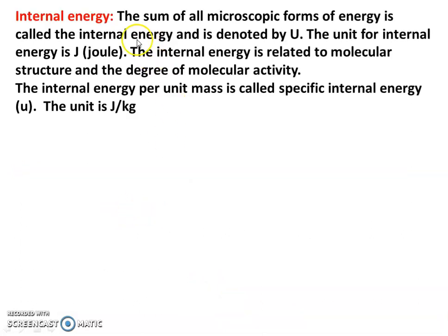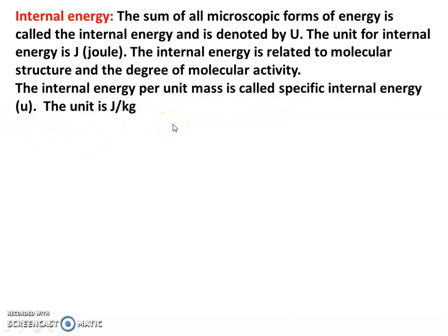Then, internal energy — this is a new concept. The sum of all microscopic forms of energy is called internal energy. It is the energy within the molecule due to molecular activity. It is denoted by capital U, and the unit is joule. Unit for any energy is joule or Newton meter. Internal energy is related to the molecular structure — how atoms are arranged — and the degree of molecular activity, based on the kinetic theory of gases. The internal energy per unit mass is called specific internal energy, denoted small u, with units joules per kilogram.